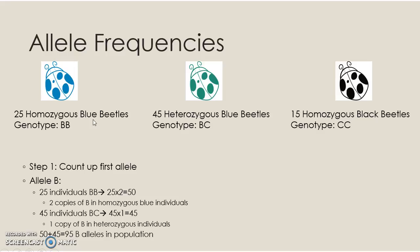The first step is to count up the first allele, starting with allele B. There are 25 individuals that are homozygous for B — 25 individuals with genotype BB. We multiply by 2 because every beetle has two alleles, so 25 times 2 is 50. There are 50 B alleles in these 25 homozygous beetles.